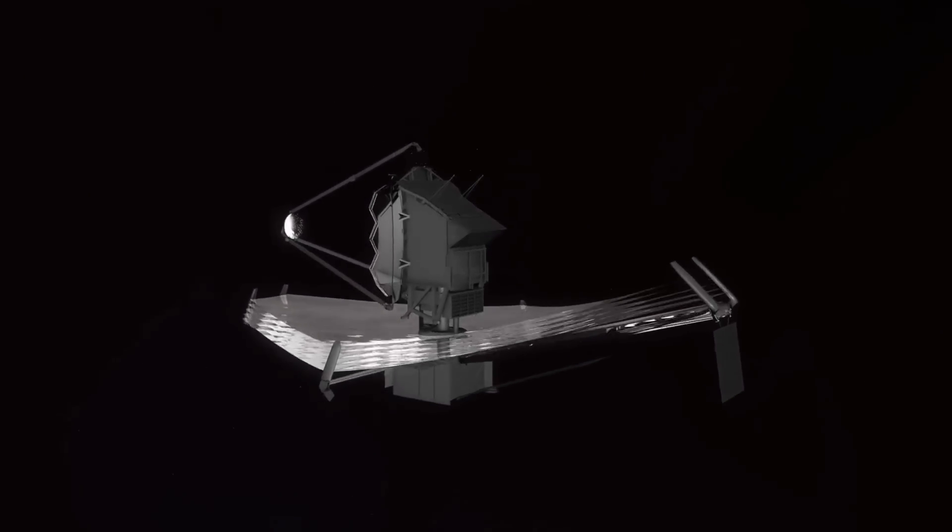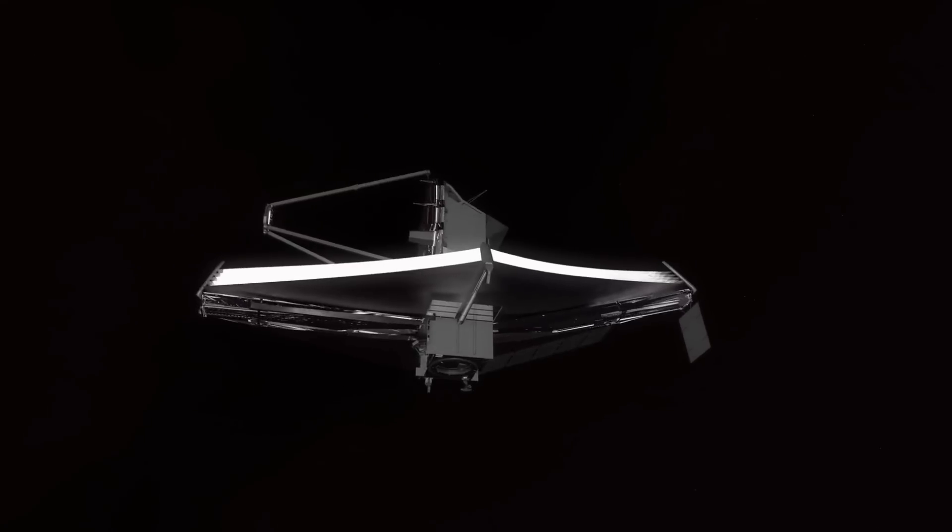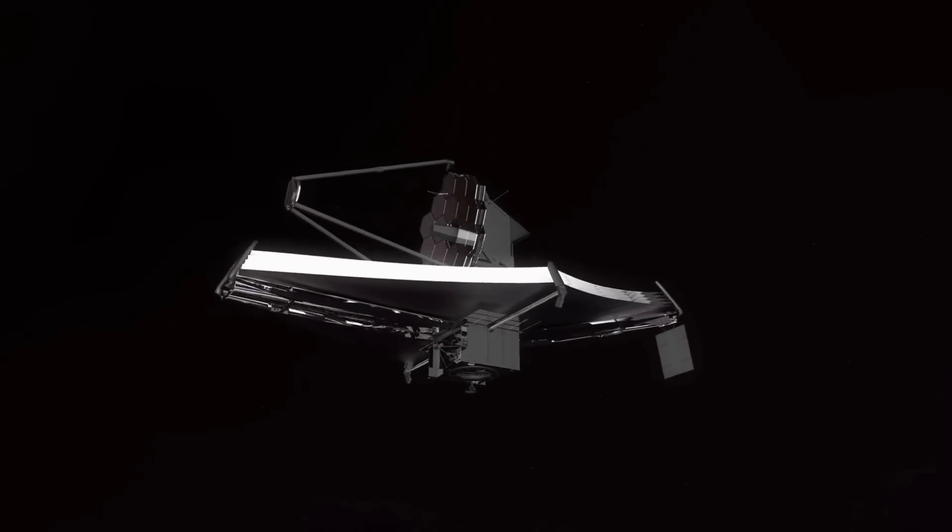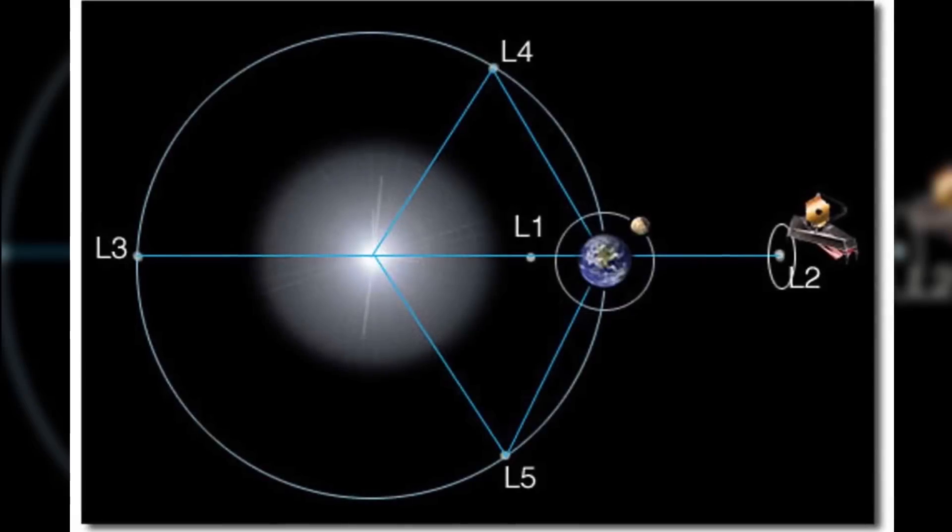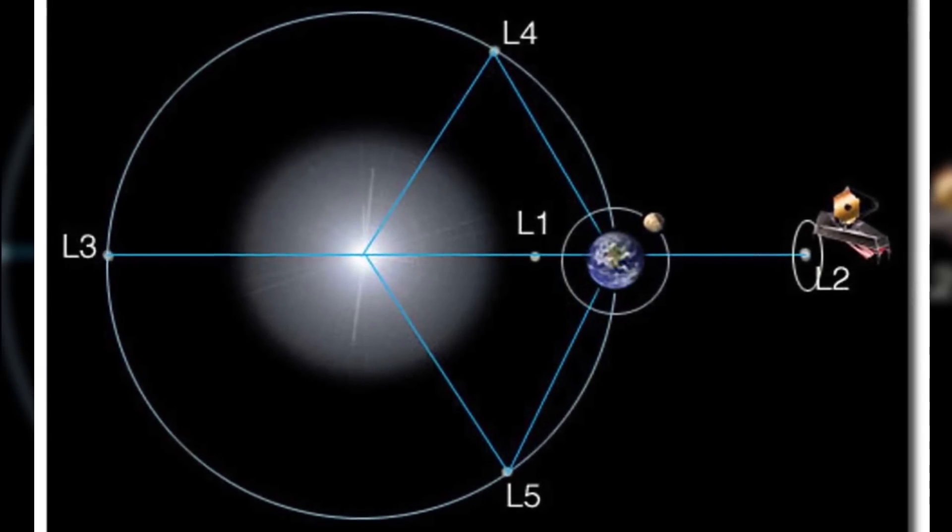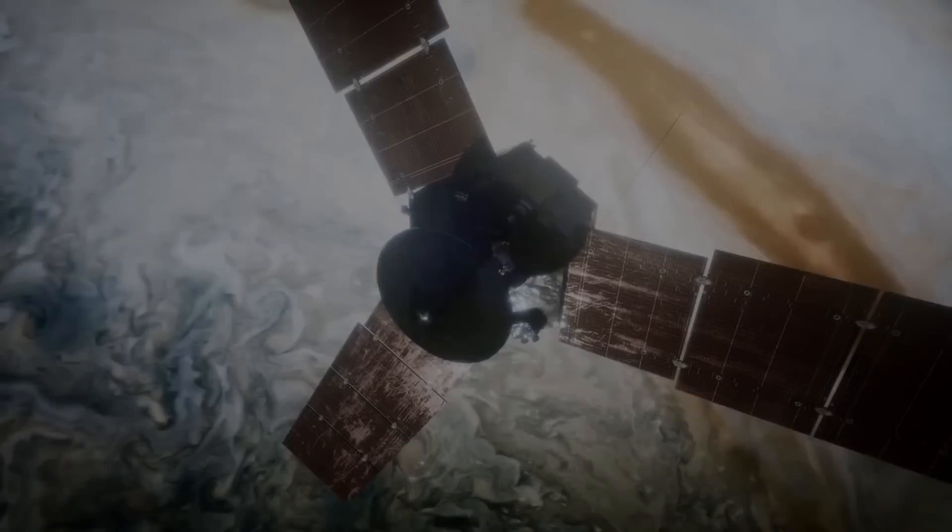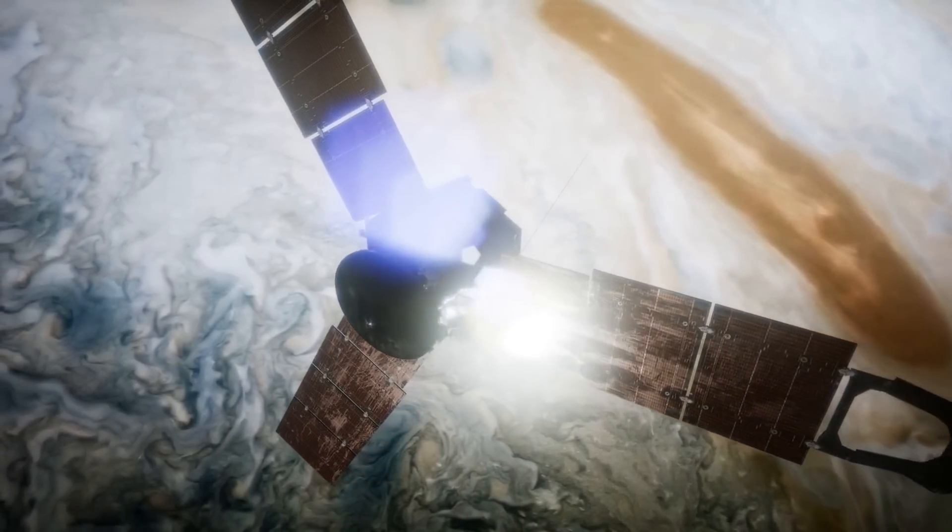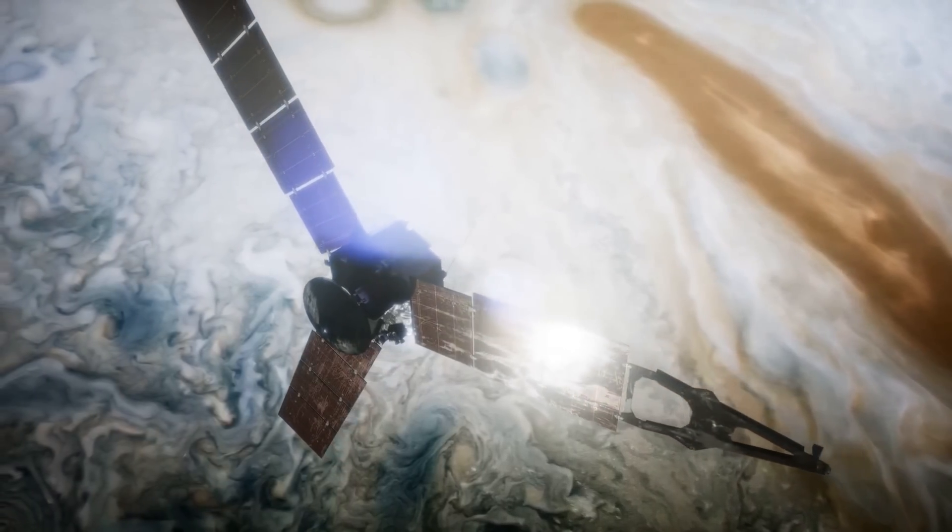After the deployment of its sunshield, the telescope continued with deploying its secondary mirror, after which the primary mirror was finally unfolded successfully, to the relief of scientists back on Earth. The telescope currently sits in a location called the second sun-Earth Lagrange point, after traveling nearly a million miles to its final destination. Lagrange points are gravitationally stable points in space, and the telescope is expected to stay here for the entirety of its mission.